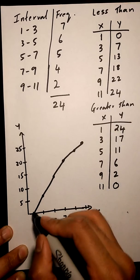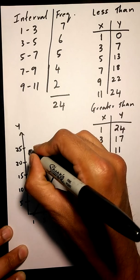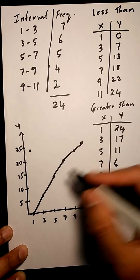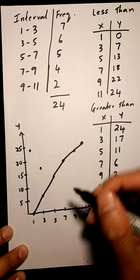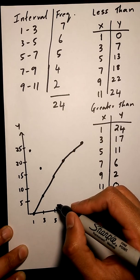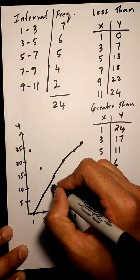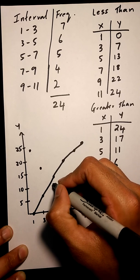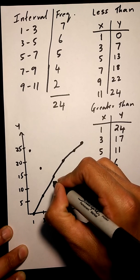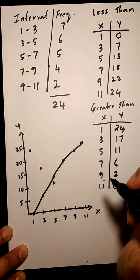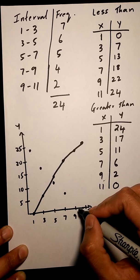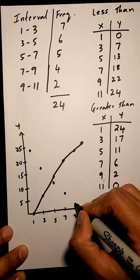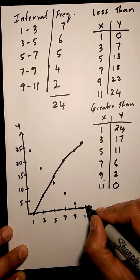Now we are going to do the greater than. So the first point is 1, 24. 3, 17. 5, 11. 7, 6. 9, 2. 11, 0.